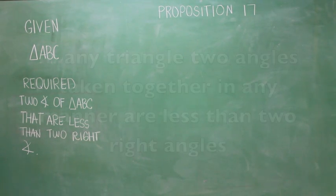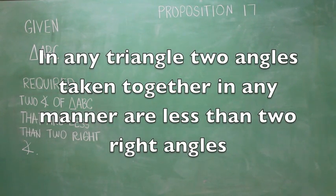Proposition 17. In any triangle, two angles taken together in any manner are less than two right angles.